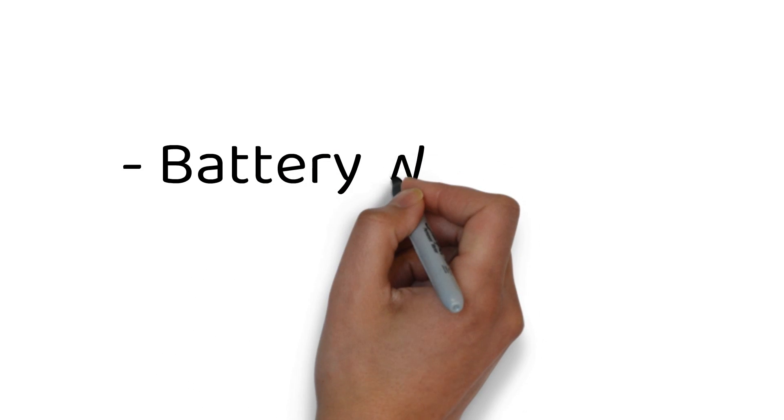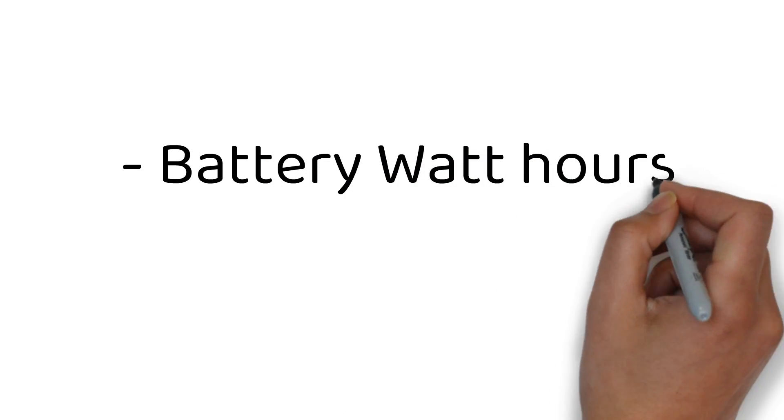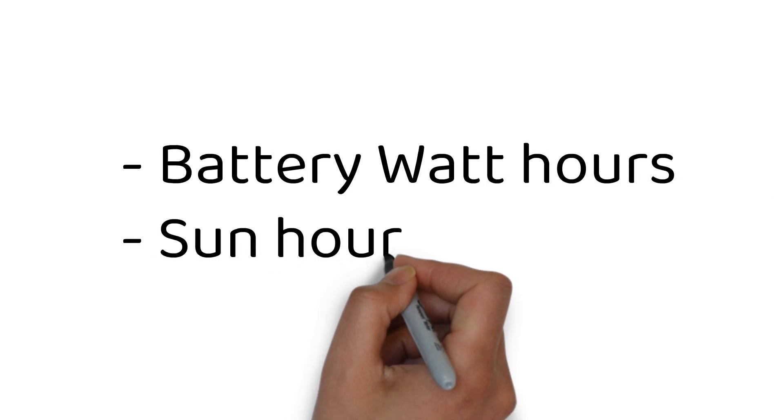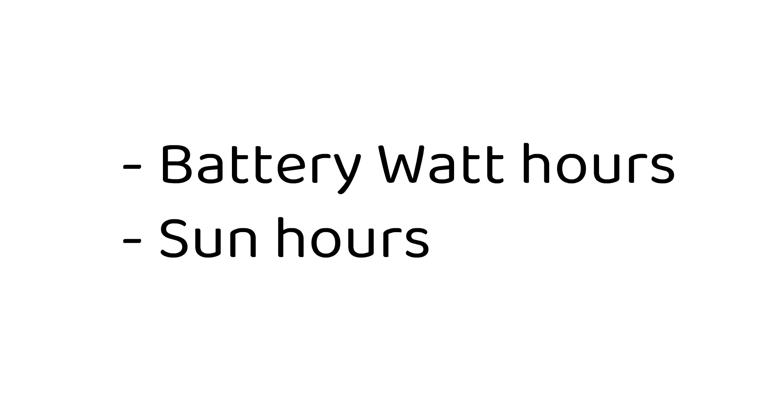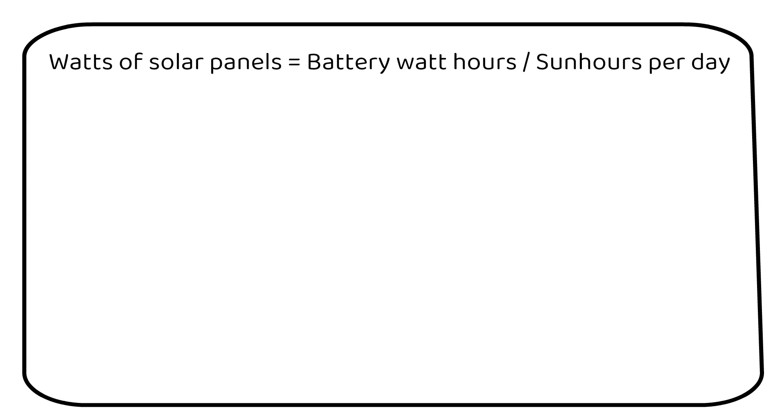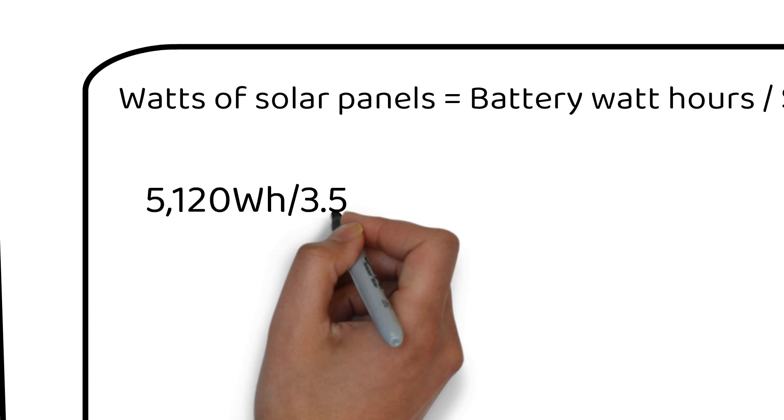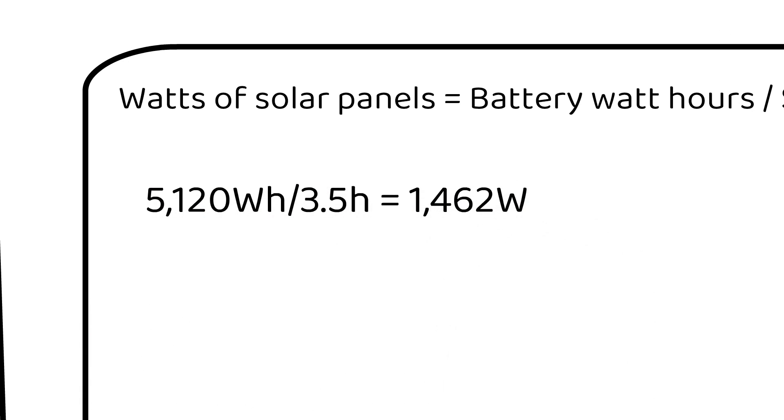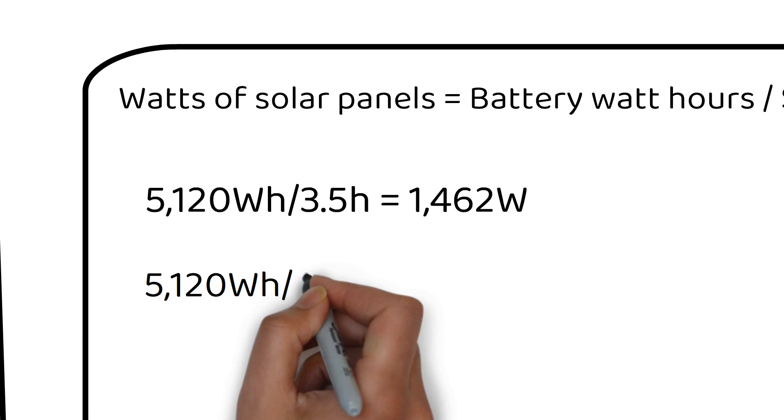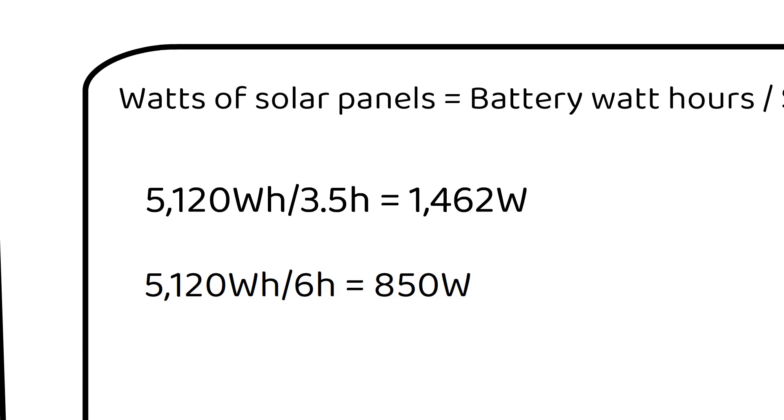We now know John's battery watt hours and the daily sunlight hours in Houston. We can apply a straightforward formula to determine the required solar panel power. The formula is watt hours divided by sun hours. When we apply this formula to John's scenario, we need a total of 1500 watts of solar panels. However, let's consider John is only residing at his location during the summer months. John now only needs 850 watts of solar panels.